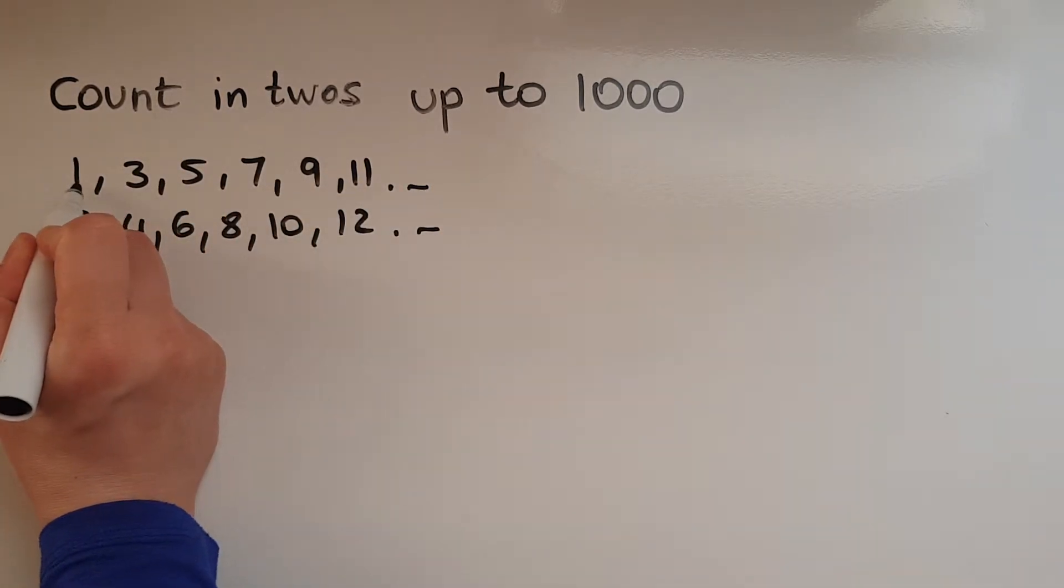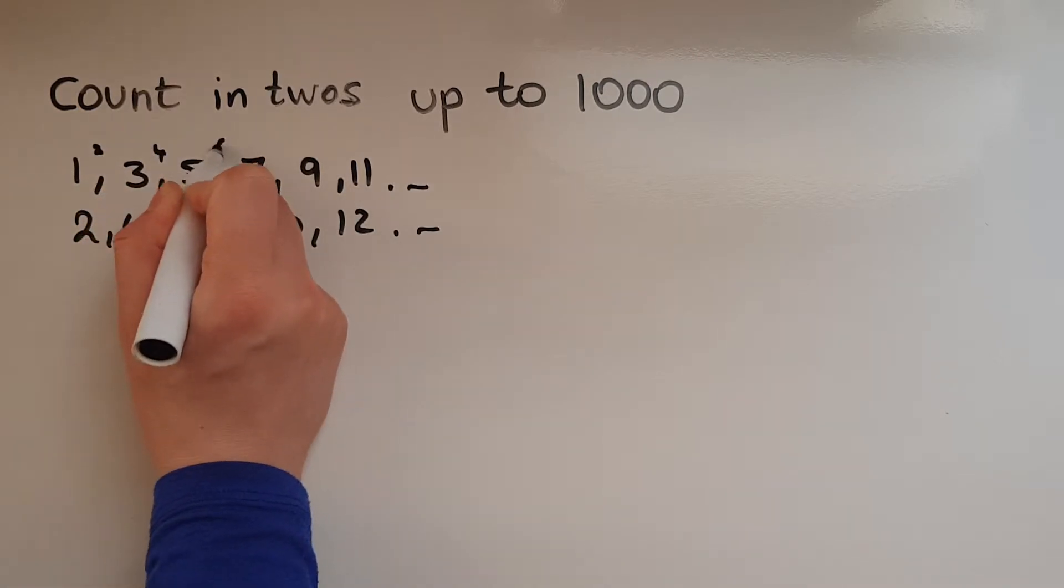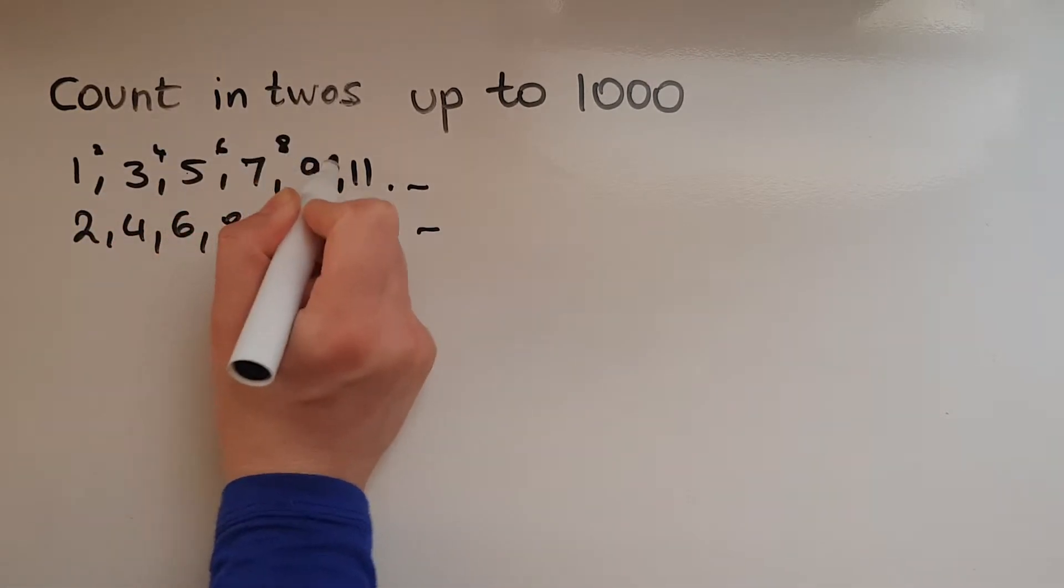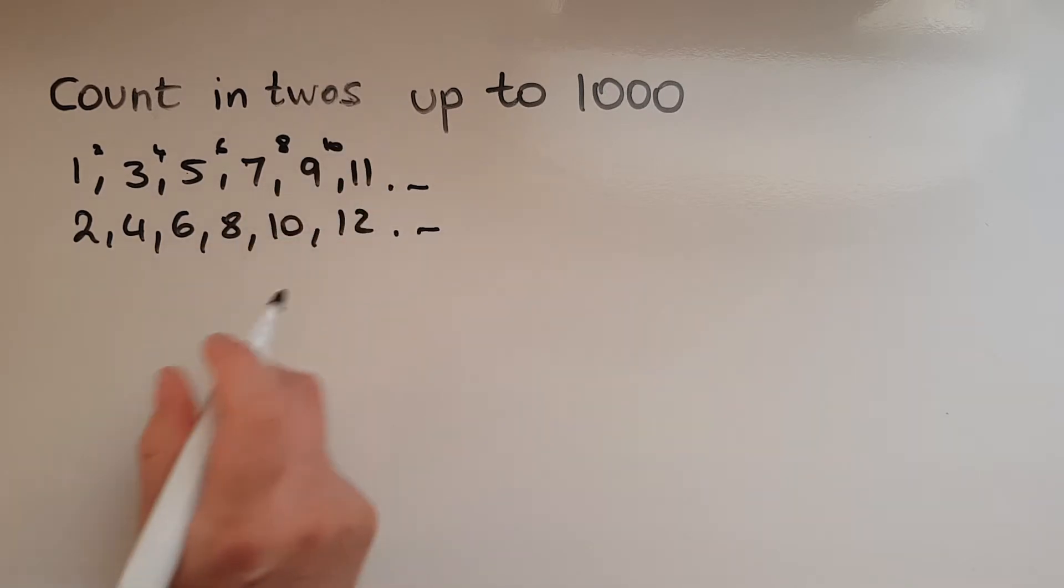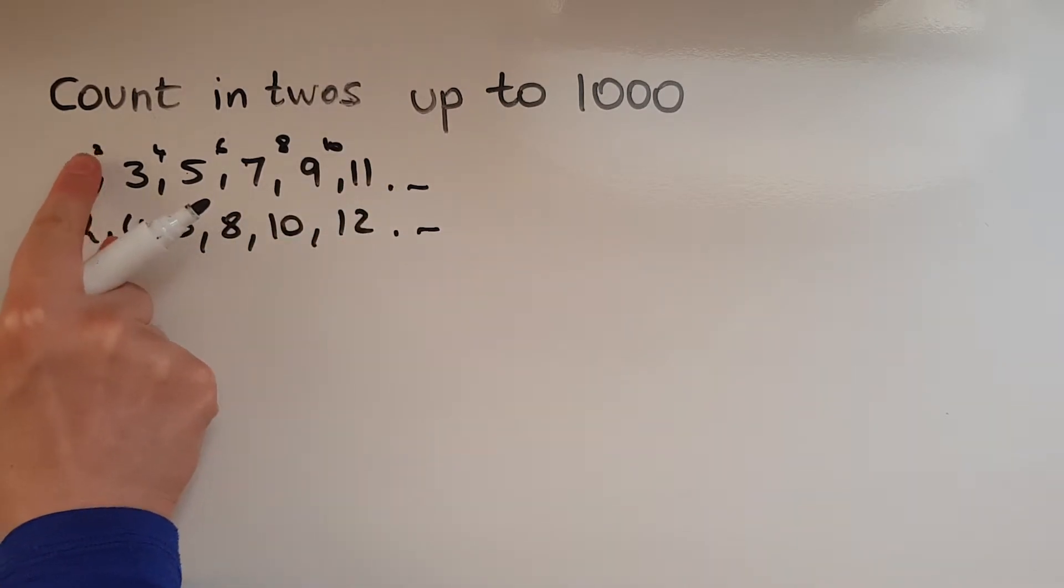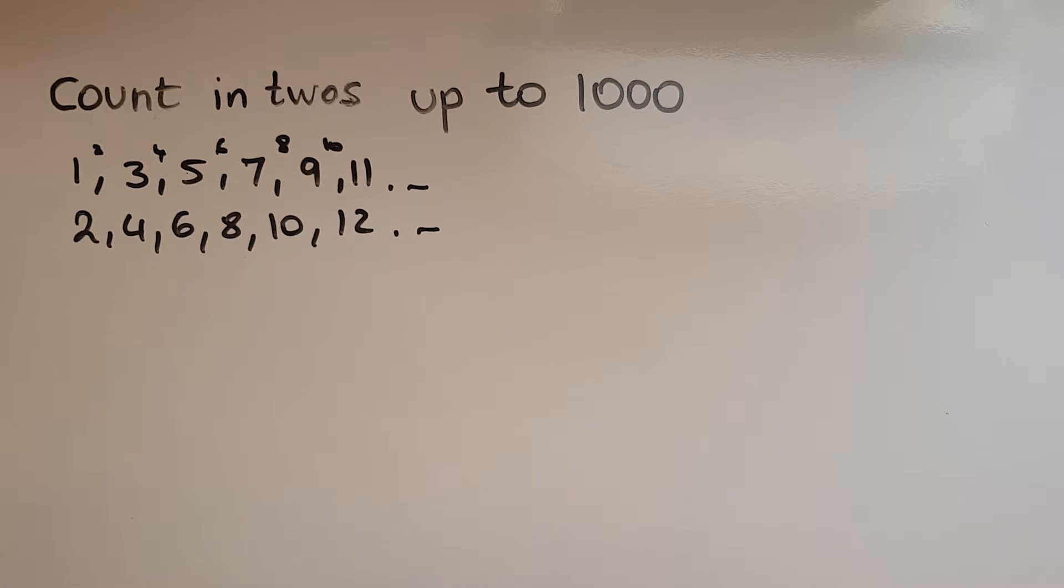So normally you'd have 1, 2, 3, 4, 5, 6, 7, 8, 9, 10, 11 and so on. But we don't include those when you count up in twos. You should be prepared to have any starting point and continue that pattern.